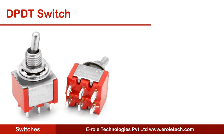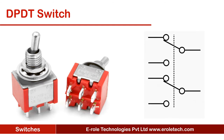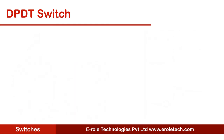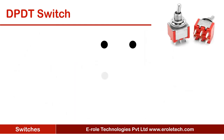Like the SPDT switch, there is another type of switch called the double pole double throw, or DPDT switch. This is the symbol of a DPDT switch. These switches have six pins. To understand its working, we can name both its middle pins C1 and C2, both the top pins A1 and A2, and both the bottom pins B1 and B2.